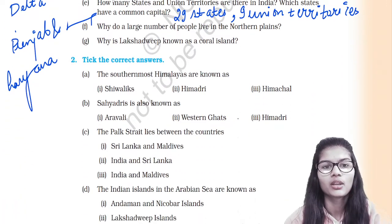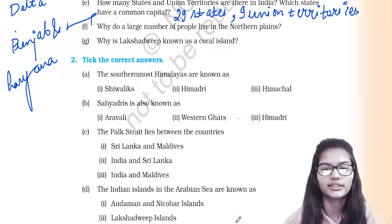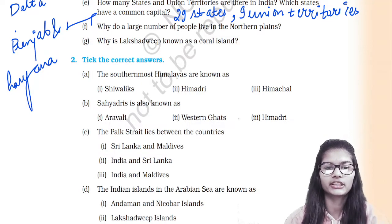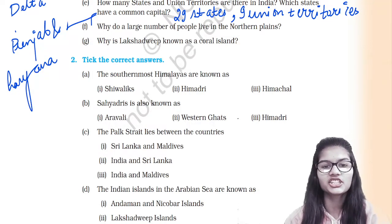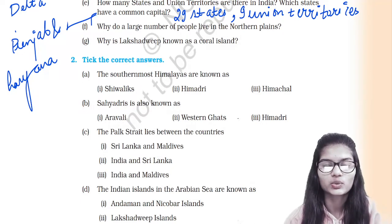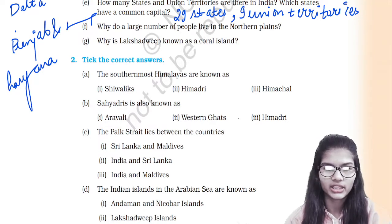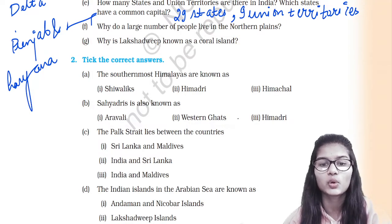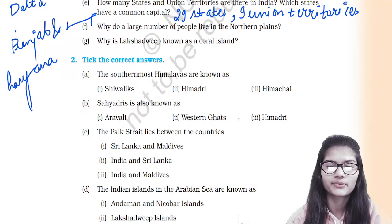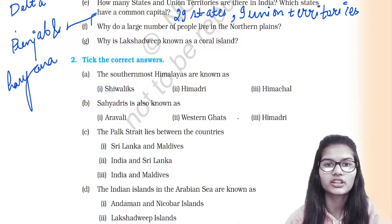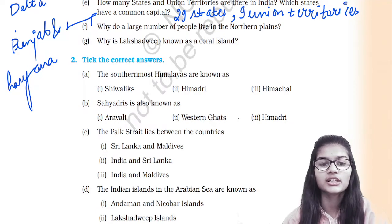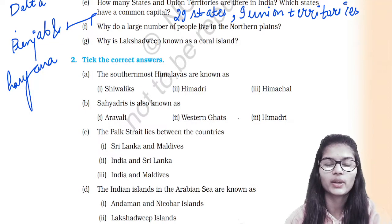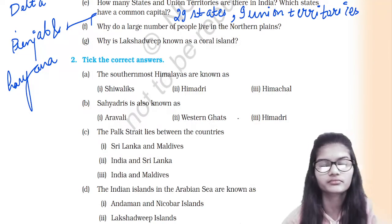Why do a large number of people live in the northern plains? Because river plains provide fertile land for cultivation. That is the reason a large population lives in the northern plains.